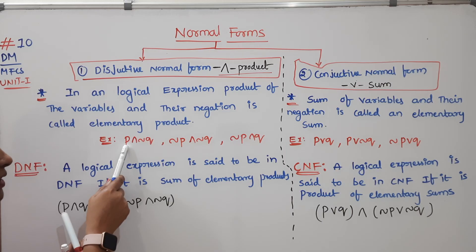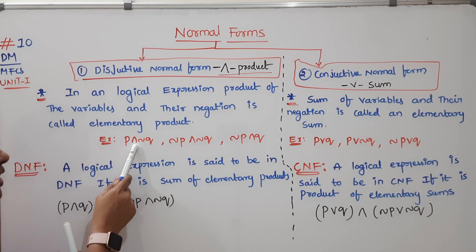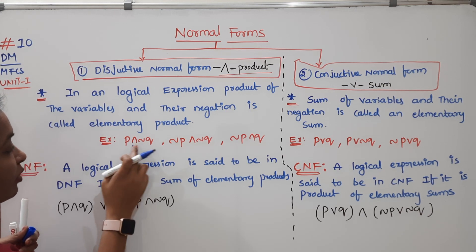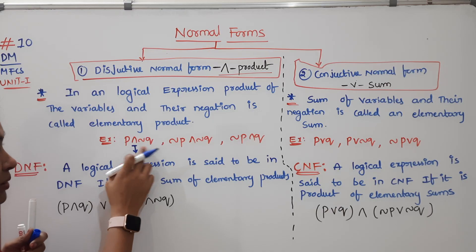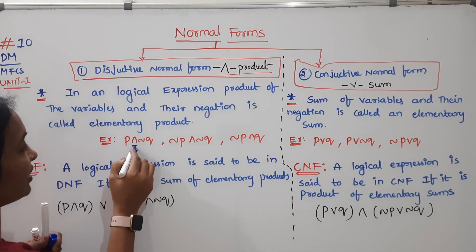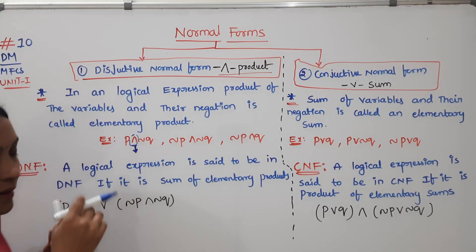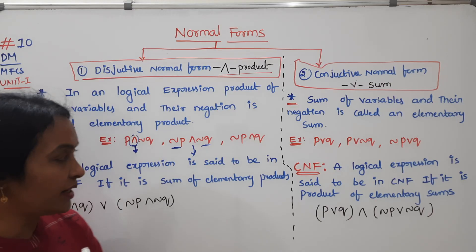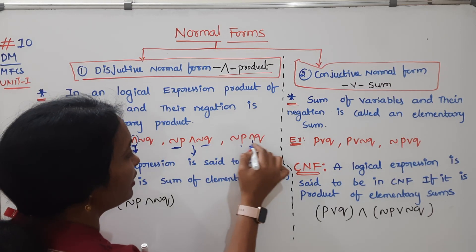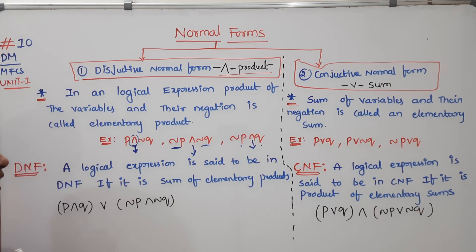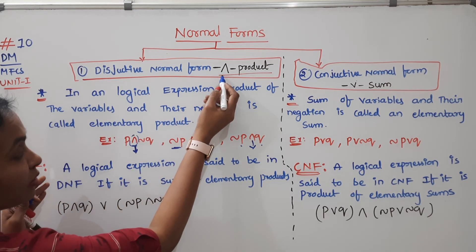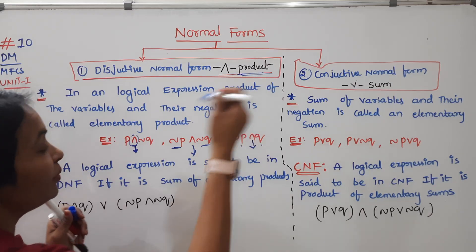For example, a negation combined with another statement using the AND symbol is an elementary product. In an elementary product, you map a statement with negation. If you have a variable in a logical expression, you can combine a variable with its negation — that is denoted as an elementary product.